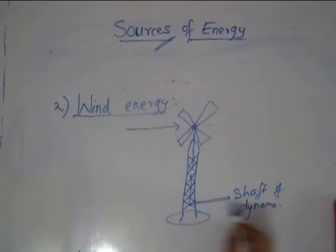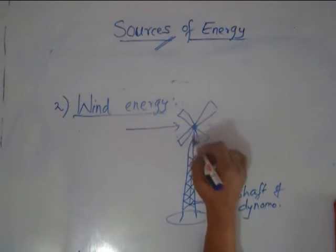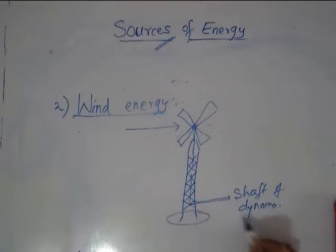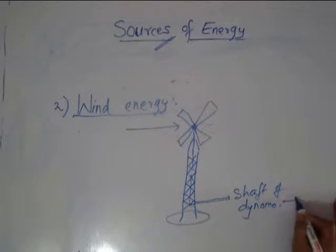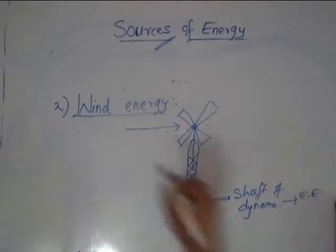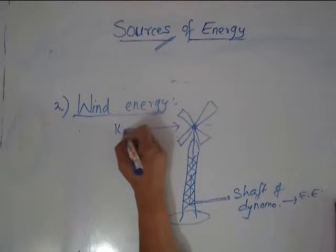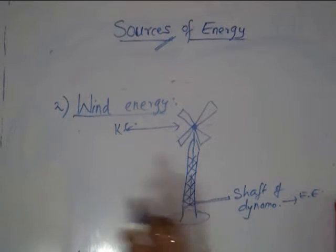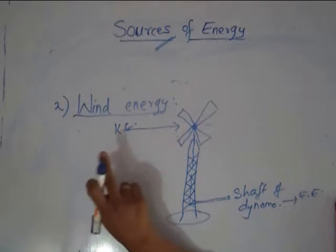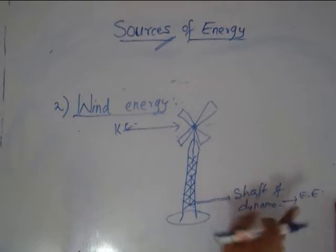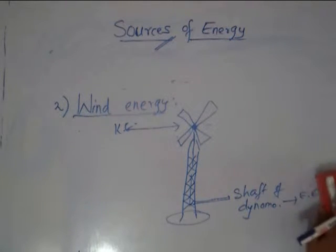The wind moves the axle, and the axle moves the shaft of the dynamo, and that produces electrical energy. It is the kinetic energy of the wind that gets converted into electrical energy. These days, because of technology, we convert kinetic energy of the wind into electrical energy.